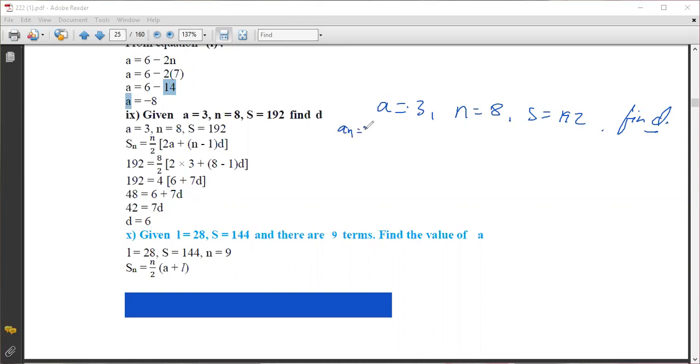The formulas are: a_n = a + (n-1)d and s_n = n/2 * (2a + (n-1)d).